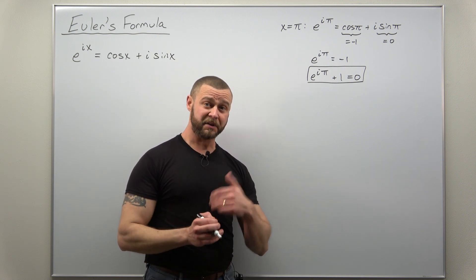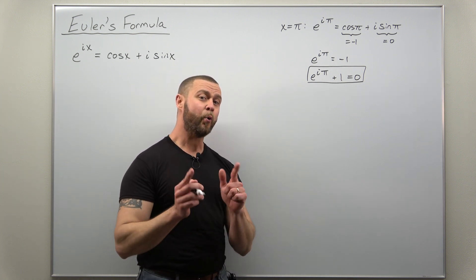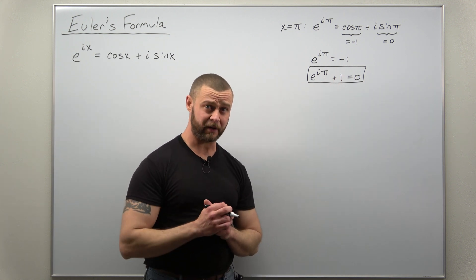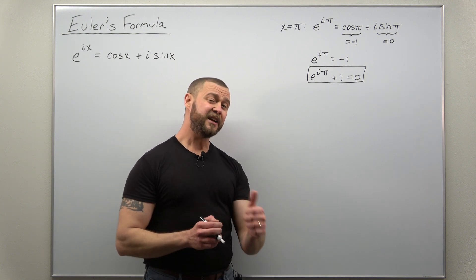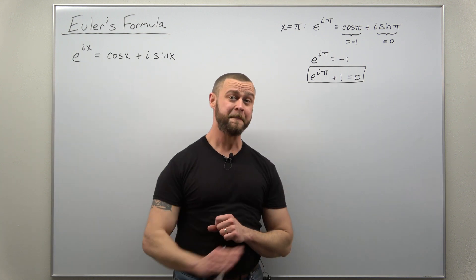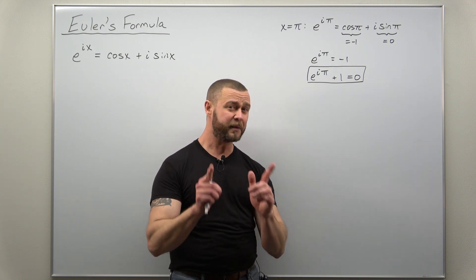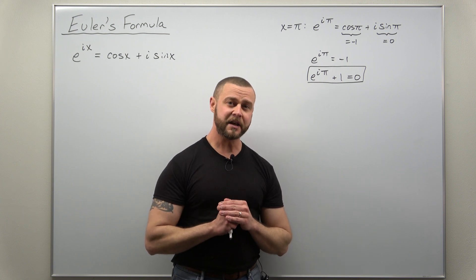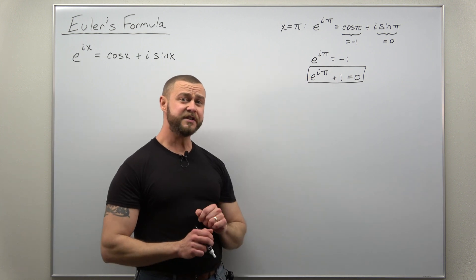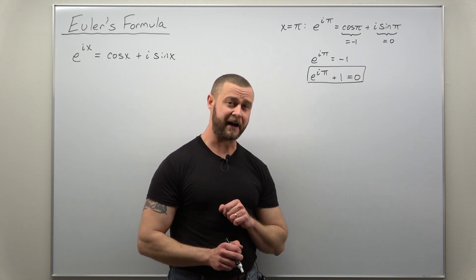That is sometimes referred to as Euler's identity, and it relates the five most important numbers in mathematics — or arguably five of the most important — zero, one, e, i, and π, all together in a very simple formula. Many mathematicians, scientists, and engineers consider either Euler's identity or Euler's formula to be one of the most beautiful equations in all of mathematics. If you're just learning this for the first time that's probably not sinking in yet, but give it time.